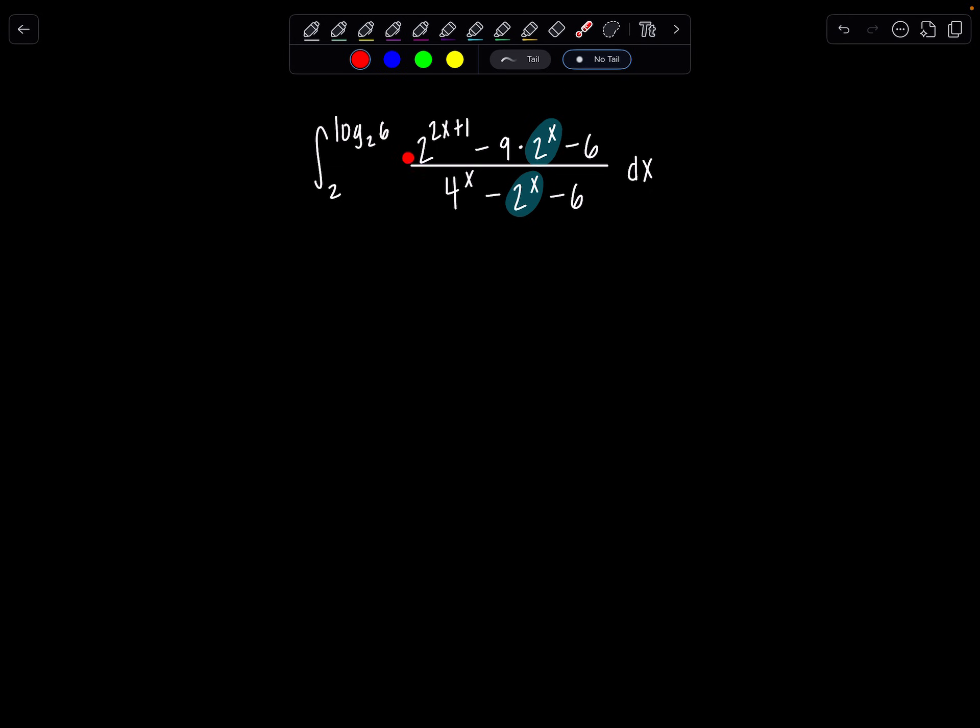Before I do that, let's play around and clean up this 2^(2x+1). If you'll remember, I can rewrite that as 2^(2x) times 2^1, and then 2^(2x) is the same as (2^x)^2, times 2^1. Similarly, this 4^x, that's (2^2)^x, which you can also write as (2^x)^2.